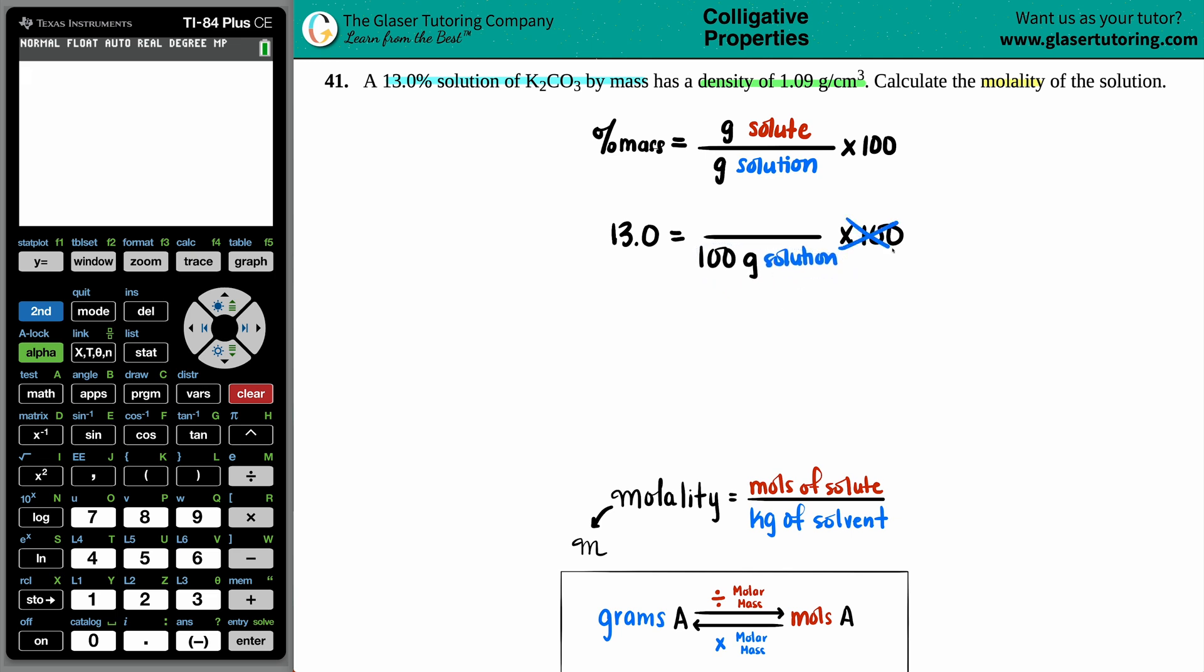And now that correlates with the grams of the solution because the solution is always the total. And that's how the 100 will cancel out. But if I'm left with 13.0, what do you think the number would have to be on the top? Yeah, it's the only number that's not canceled, right?